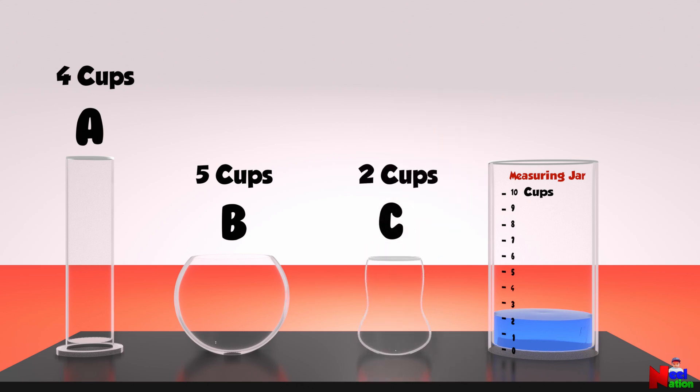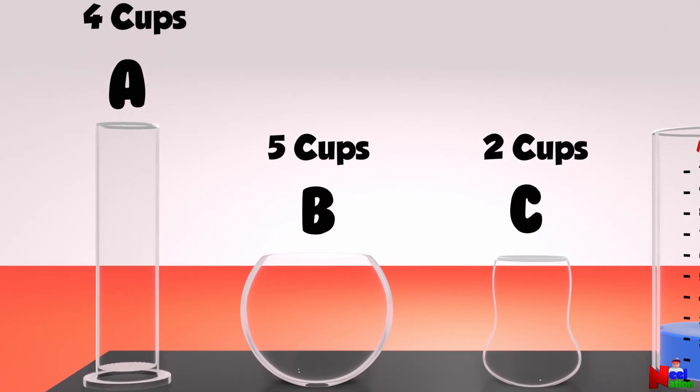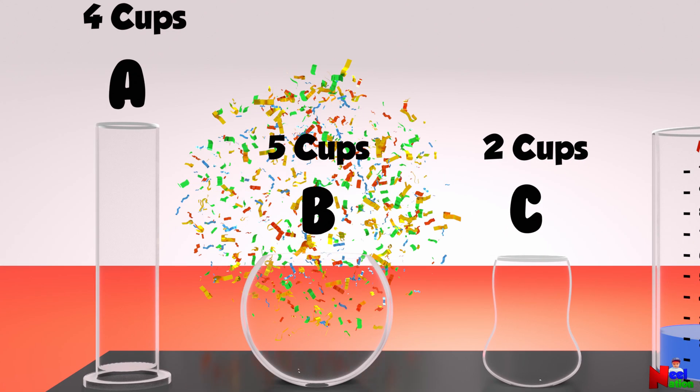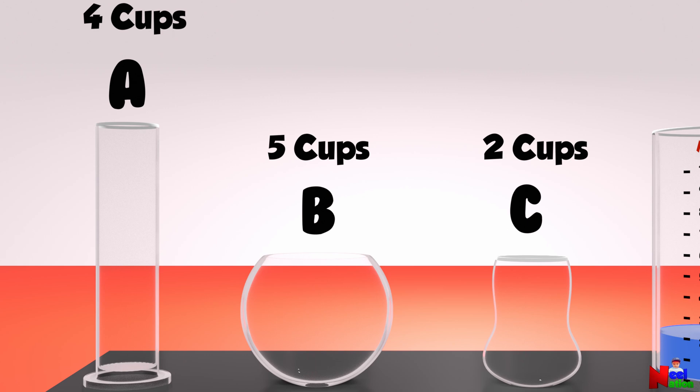So, which vessel has the largest volume? Container B. Container B. You got it. This was a simple experiment to compare the volume of objects.